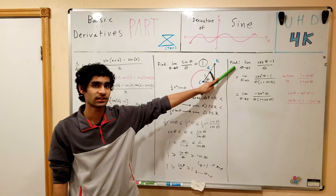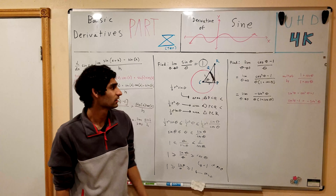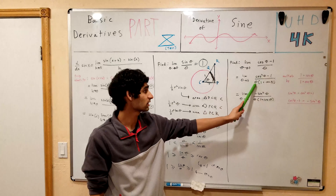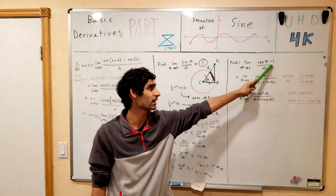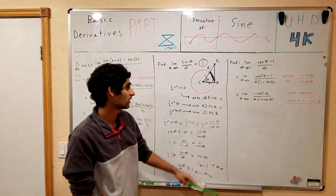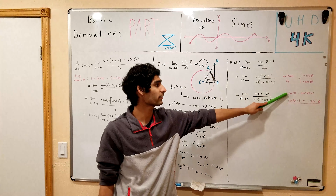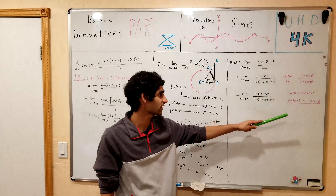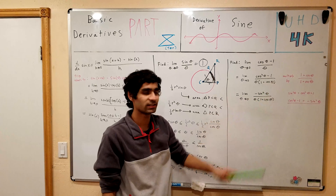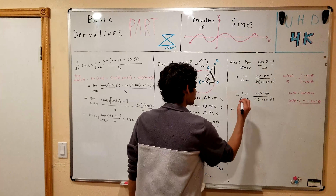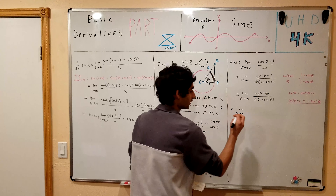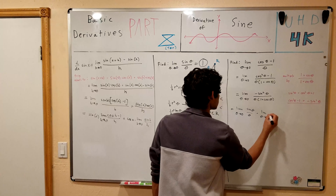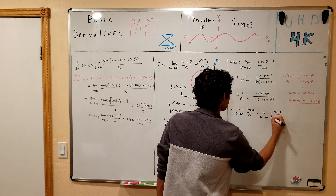Next we'll find the limit as theta goes to 0 of cosine theta minus 1 over theta. We multiply this expression by (1 plus cosine theta) over (1 plus cosine theta) to get cosine squared theta minus 1, all over theta times (1 plus cosine theta). Using the trig identity sin squared theta plus cosine squared theta equals 1, we can rearrange to get cosine squared theta minus 1 equals negative sine squared theta. Substituting, we split into two limits: the limit of sine theta over theta, times the limit of negative sine theta over (1 plus cosine theta).